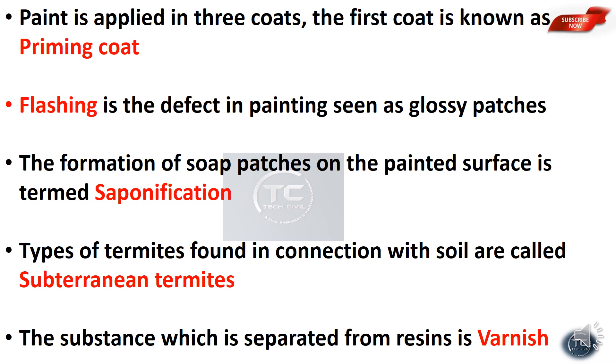Soap patches form on the surface as a defect in painting. This defect is called saponification. Saponification occurs due to chemical attack on the paint, forming soap-like patches.